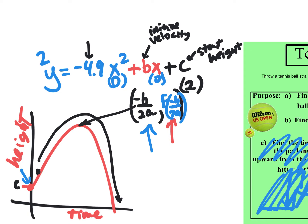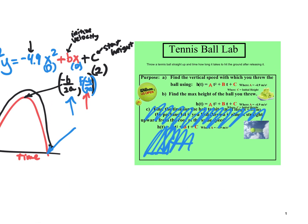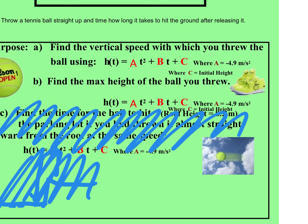That leaves you just one spot left, and obviously this is the important spot. You're going to have to do this in the context of a lab. You've got to figure out the vertical speed — which is b — with which you threw the ball. You're going to use initial height being 2, so c is 2. And then you've got to figure out the max height of the ball that you threw.